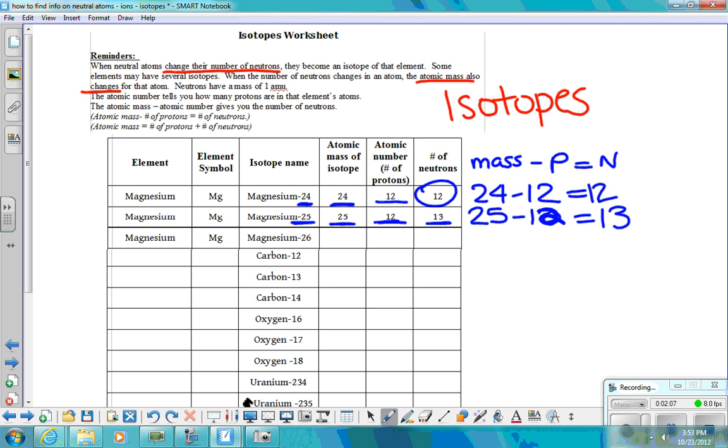So let's do this one, magnesium-26. 26 here tells us how much mass there is. Again, the atomic number tells us how many protons there are. In this case, magnesium has 12 protons because the atomic number is 12. To find the number of neutrons, I take the atomic mass. I subtract the number of protons, which will give me the number of neutrons. So I have 14 neutrons in magnesium-26.